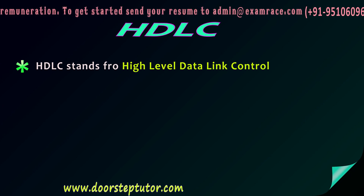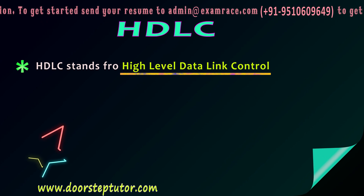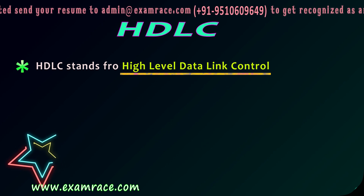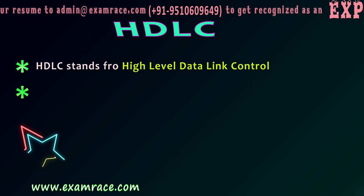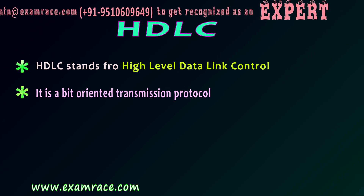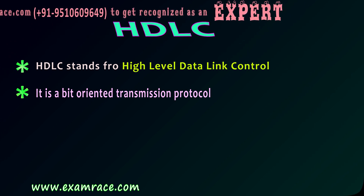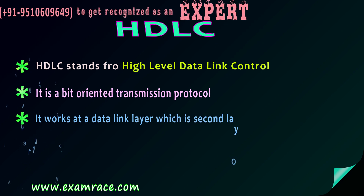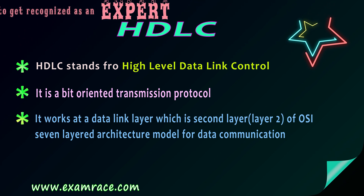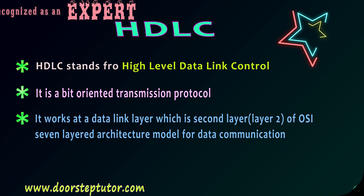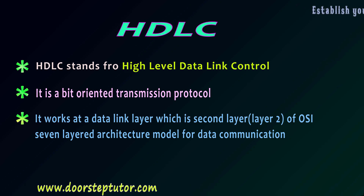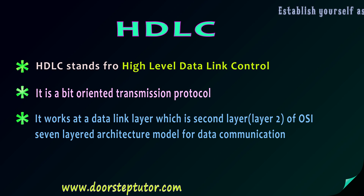HDLC stands for High Level Data Link Control. It is a bit-oriented transmission protocol. HDLC works on layer 2 of the OSI model, that is the data link layer — which is why its name includes 'data link control.' It works at the data link layer, which is the second layer of the OSI 7-layered model for data communication in a network.